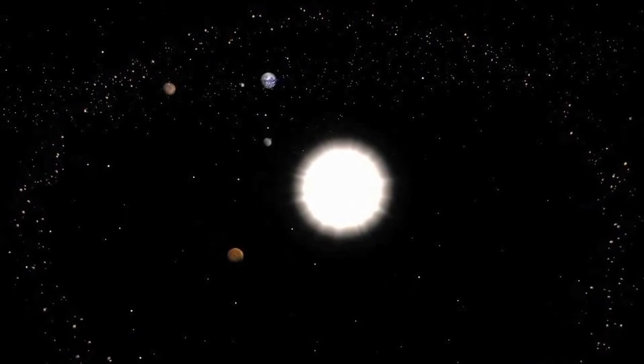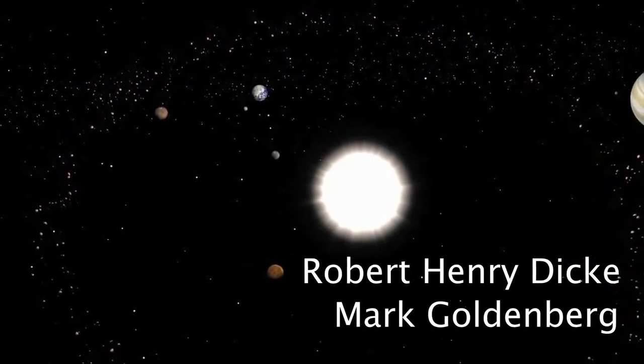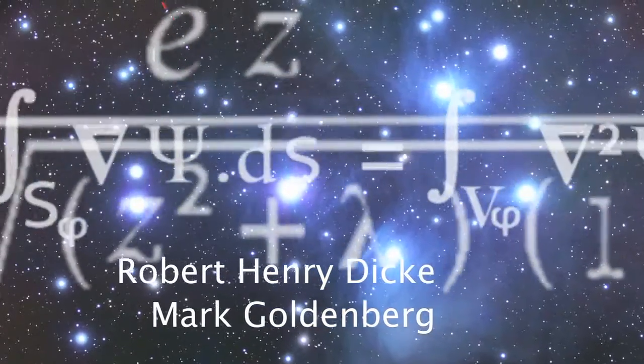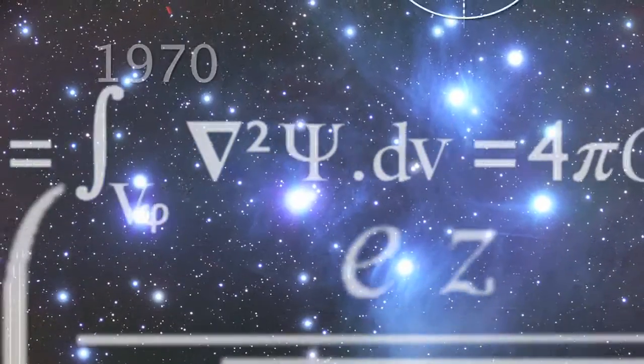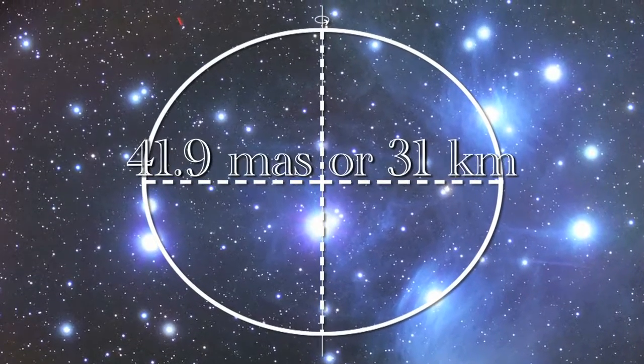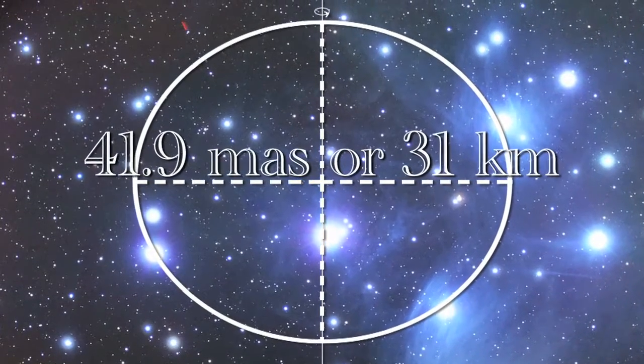Then, Robert Henry Dicke and Mark Goldenberg laid down the base of the study of the parameters of the shape of the Sun in 1970. They measured the solar oblateness at 41.9 milliarcseconds and revealed the importance of those measures to the scientific community.